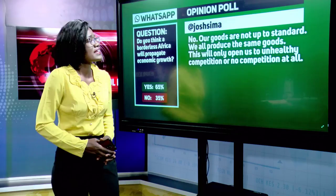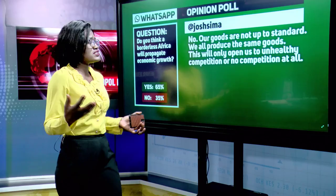Josh Sima says African goods are not up to standard and we all produce the same goods, leading to unhealthy competition. But that's a foreign ideology — Nigeria doesn't produce cold tea, Morocco doesn't produce coffee. Even within the East African Community, Kenya produces maize alongside Uganda and Tanzania, and Uganda's sugar does well while Kenya's sugar industry is almost dying. That forces Kenya to examine what is wrong with its sugar industry.